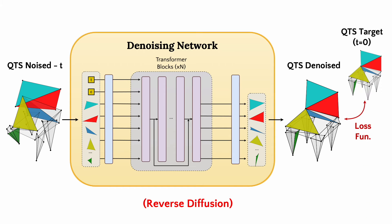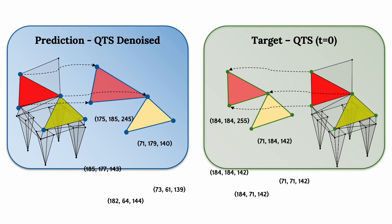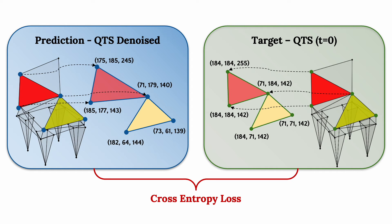Finally, we compute the loss function by comparing the denoised version with the original unperturbed triangle soup. PolyDiff training is driven by standard cross-entropy losses. The loss is computed between the discrete coordinate values of the denoised version and those of the original unperturbed triangle soup.